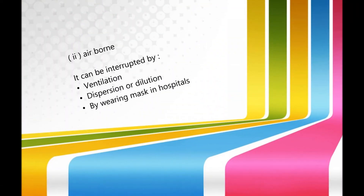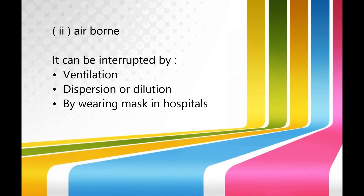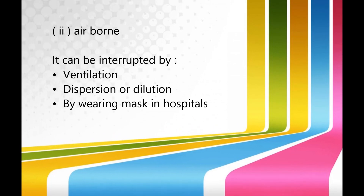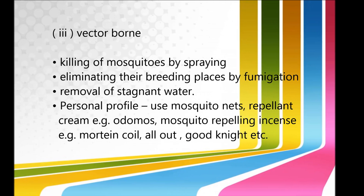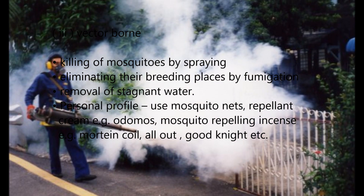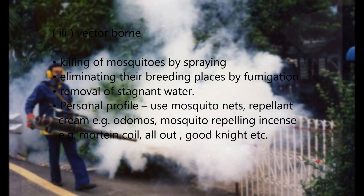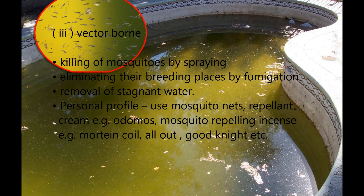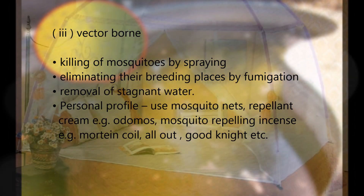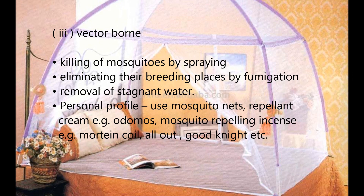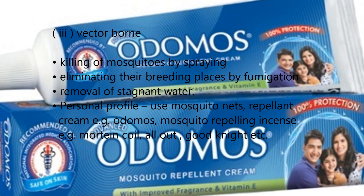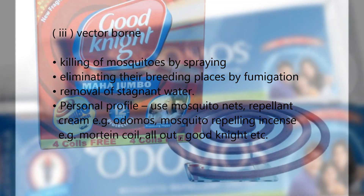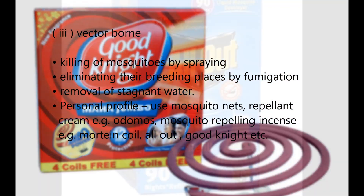Air-borne: It can be interrupted by ventilation, dispersion or dilution, and by wearing masks in hospitals. Vector-borne: It can be interrupted by killing mosquitoes by spraying, eliminating their breeding places by fumigation, removal of stagnant water, maintaining personal protection by using mosquito nets, repellent creams like Odomos, and repelling incenses like mortine coil, All Out, etc.